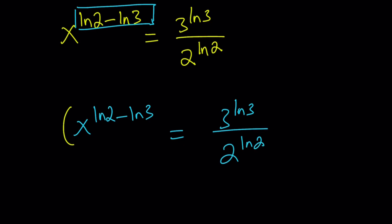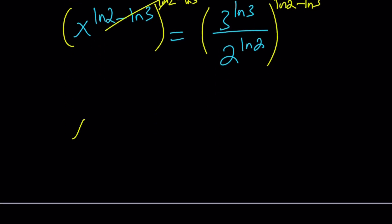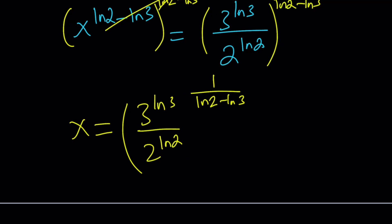Let's raise both sides to the power 1 over (ln2 minus ln3), and the same on the right-hand side. These two exponents cancel out, giving us x on the left-hand side. So the value of x is (3 to the power ln3 over 2 to the power ln2) to the power 1 over (ln2 minus ln3). You could write the denominator exponent as ln(2/3), but that's not a huge improvement — it's essentially the same thing. That's the value of x.